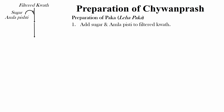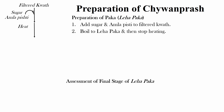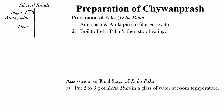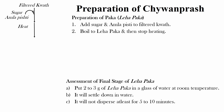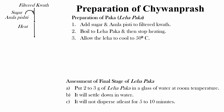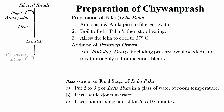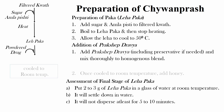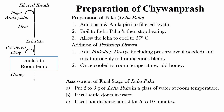Add sugar and Amla Pisti to the filtered Kwatha and boil to Leha Paaka, then stop. The assessment of the final stage of Leha Paaka is done by putting 2–3 grams of Leha Paaka in a glass of water at room temperature; it will not settle down and will not disperse for at least 5–10 minutes. Allow the Leha Paaka to cool to 50 degrees centigrade. Then add Prakshepa Dravya including preservative if needed and mix to a homogeneous blend. Once cooled to room temperature, add honey. Check for quality and then pack.